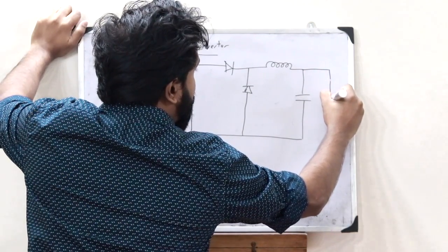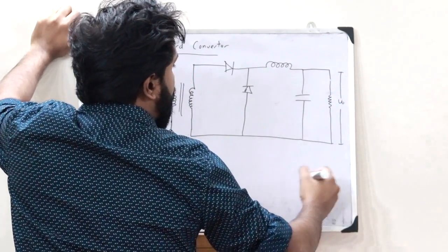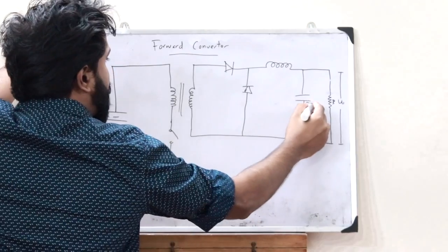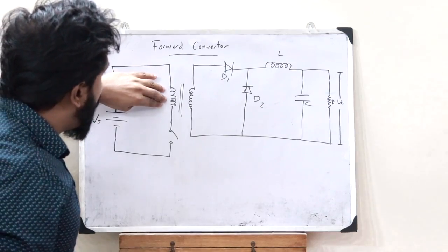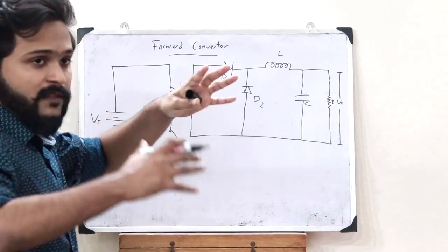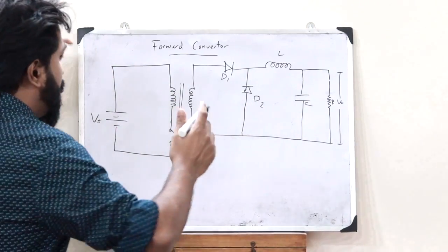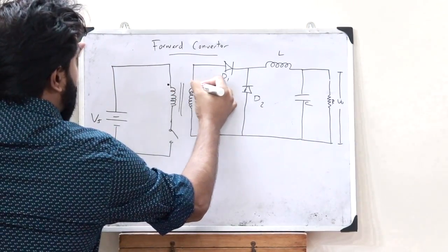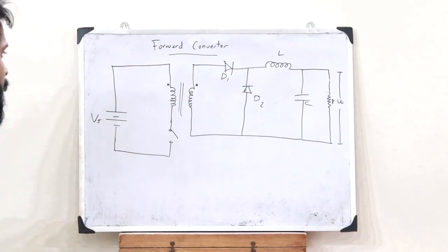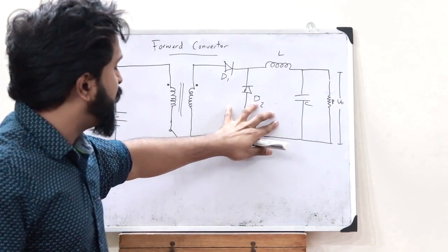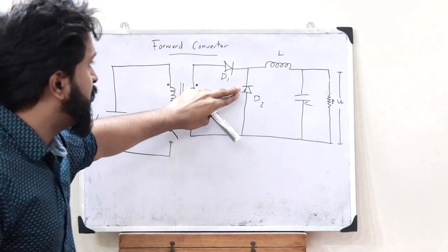A load resistance is connected across which the output voltage V0 is obtained. Let this be R, C, L, D1, and D2. In this transformer, both windings have the same polarity, and to denote that, dots are placed using dot convention. The difference in this circuit compared to the flyback converter is that here we have provided an extra inductor and a diode.